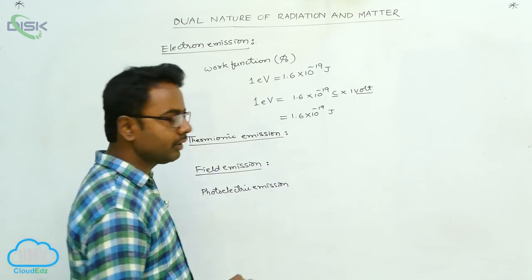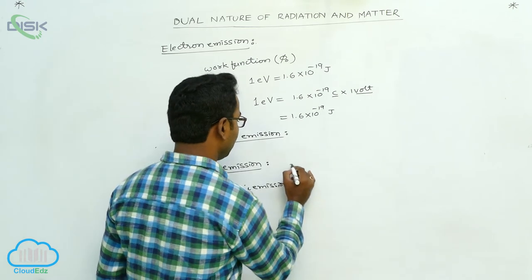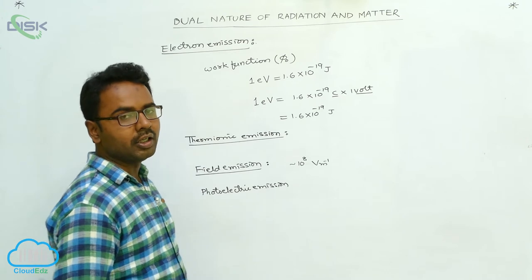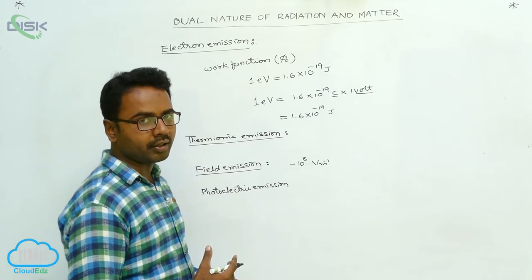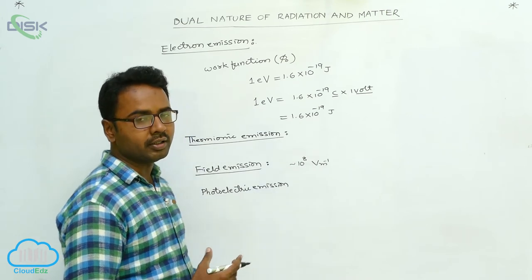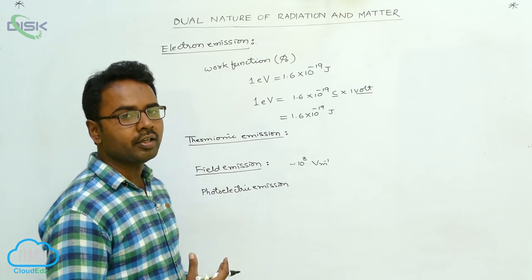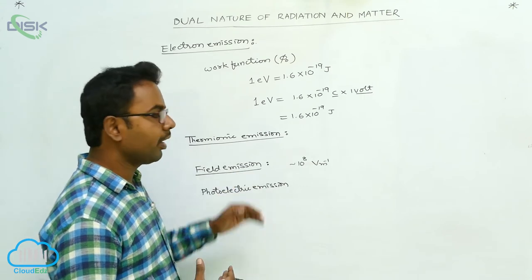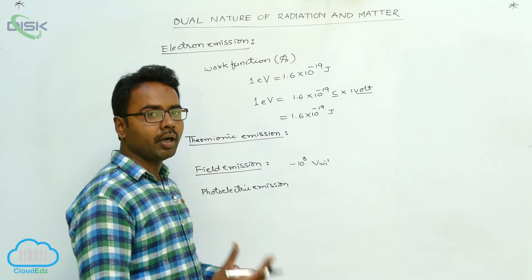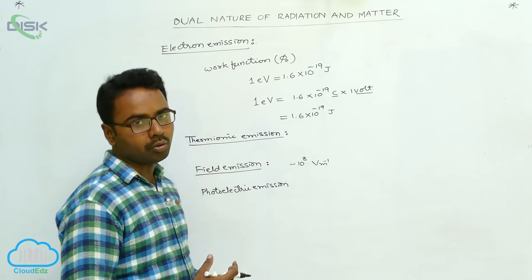Field emission: when a strong electric field of the order of approximately 10⁸ volt per meter is applied to a conductor or solid, the electrons gain sufficient energy to come out from the metal surface and are emitted. Such type of emission is called field emission — the emission of electrons by applying a sufficiently strong electric field of the order of 10⁸ volt per meter.